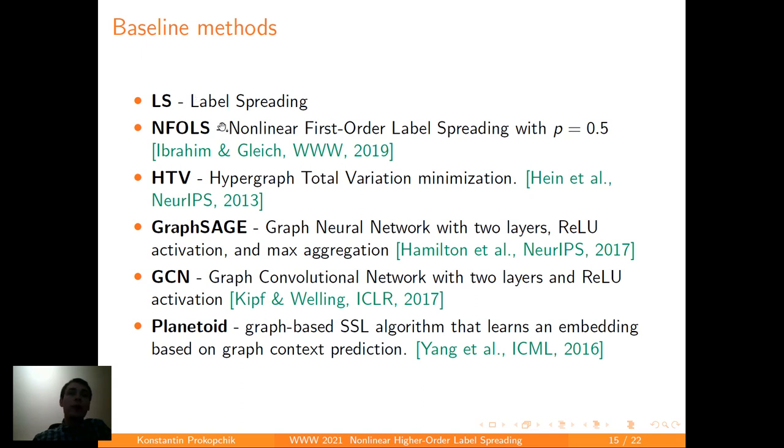Now we compare our algorithm to several methods. First of all, of course, label-spreading, then nonlinear first-order label-spreading algorithm, then hypergraph total variation minimization, then two neural network methods, and another graph-based algorithm that learns an embedding based on graph context prediction, which is called planetoid.